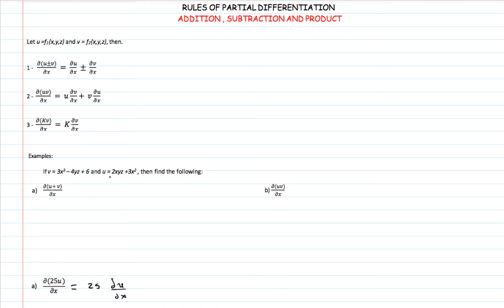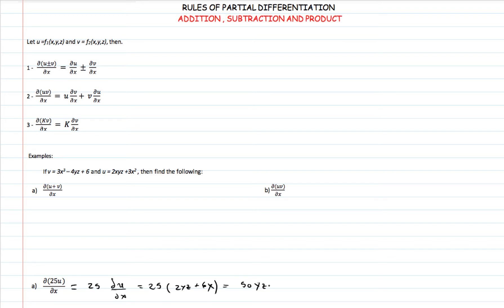u is 2xyz plus 3x squared. We want to find the partial derivative of u with respect to x only. When finding the partial derivative with respect to a specific variable, all other variables are treated as constants. So we have 25 times the partial derivative of u with respect to x. The derivative of x gives 1 and the derivative of 3x squared gives 6x. So we have 25 into 2yz plus 6x. Multiplying through gives us 50yz plus 150x. This is the solution — we simply multiply the constant with the derivative of the function.